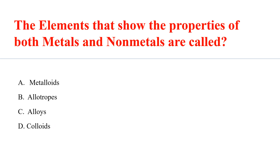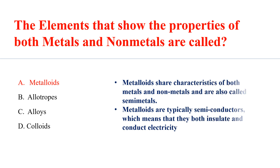The elements that show the properties of both metal and non-metal are called metalloids. Metalloids share characteristics of both metals and non-metals and are also called semi-metals. Metalloids are typically semiconductors, which means they both insulate and conduct electricity.